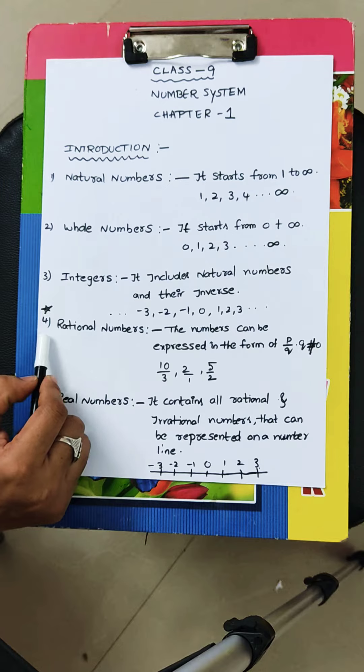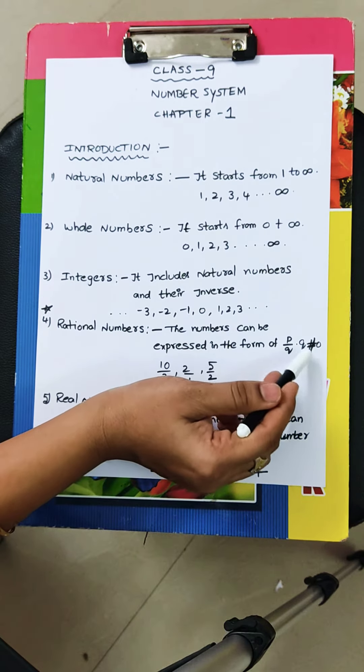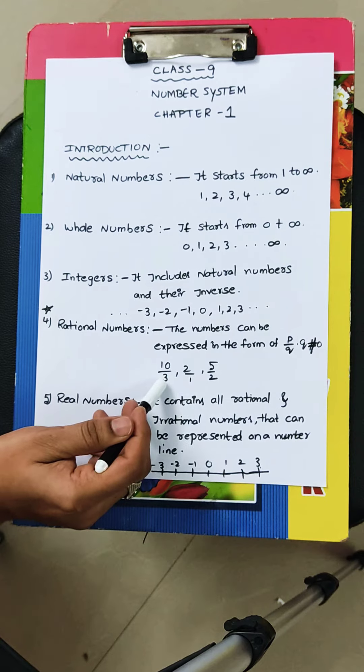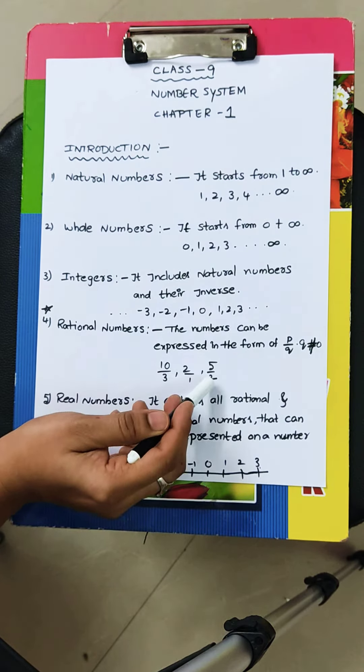Rational numbers, rational numbers is very important. What are the rational numbers? The numbers can be expressed in the form of P by Q. Q is not equals to 0, I mean Q should not write 0. So, 10 by 3, 2 by 1, 5 by 2.